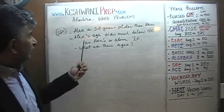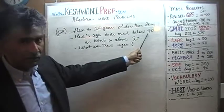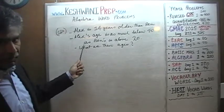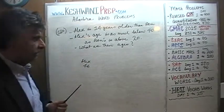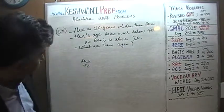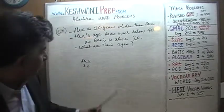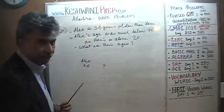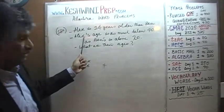We are told that Alex is 14 years older than Ben. Alex's age is further told to be as much below 40 as Ben's is above 20. For example, let's make up a number for Alex's age. If we pretend Alex is 36 years old, then he is 4 years below 40, because 40 is 4 more than 36. That's what this means.